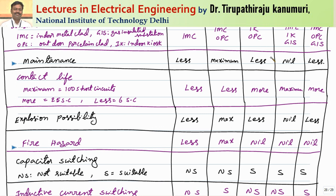Air blast circuit breakers have less maintenance. For vacuum circuit breakers, maintenance is essentially nil — they are rated for a fixed number of operations up to 3000, and if damaged they must be sent to a service center for repair, not repaired on-site. SF6 circuit breakers have less maintenance. For contact life: air brake and minimum oil circuit breakers have less contact life (about 6 short circuits), while air blast has more (up to 25), and vacuum and SF6 circuit breakers have maximum contact life, withstanding more than 25 short circuits.